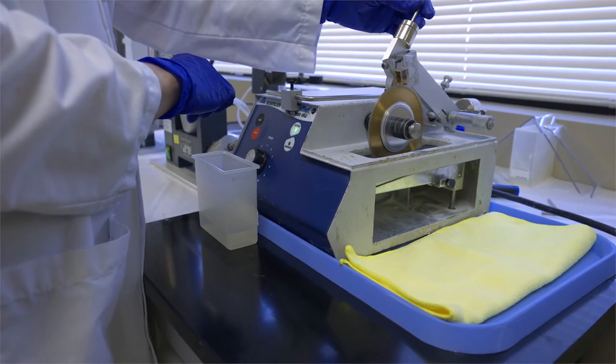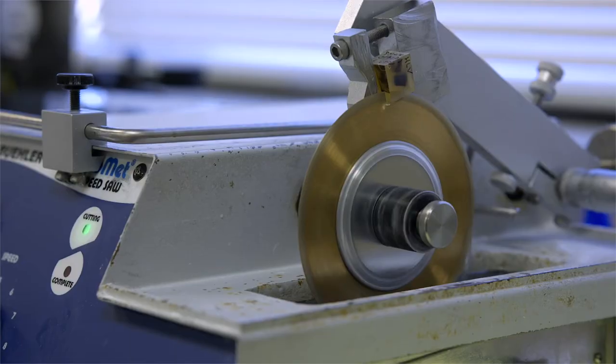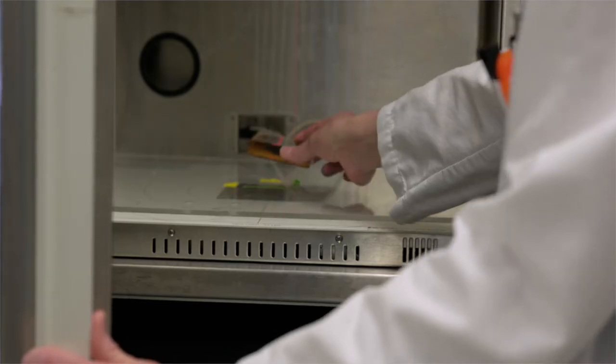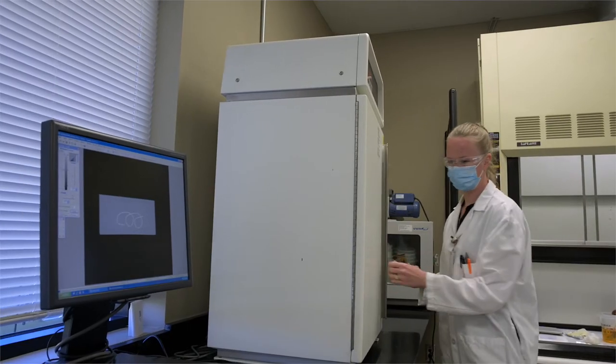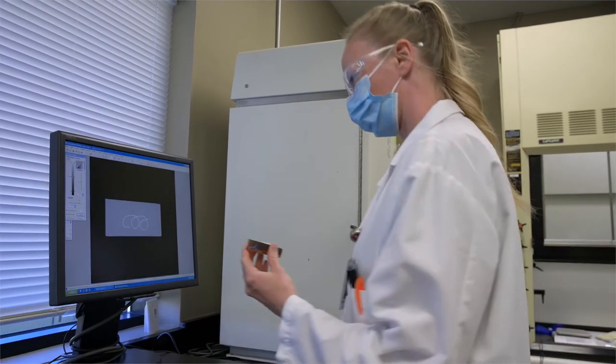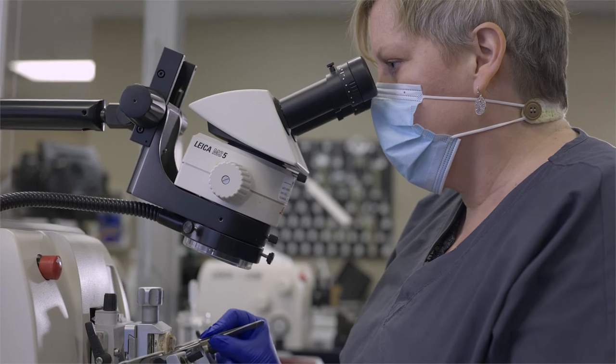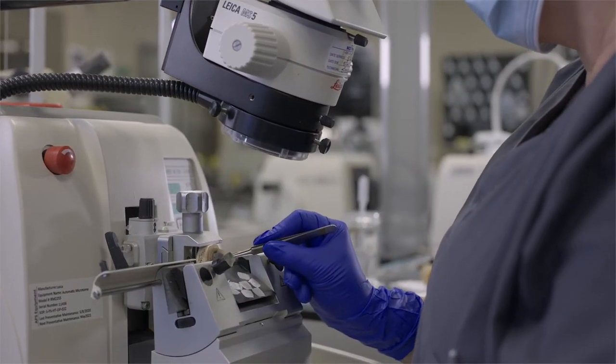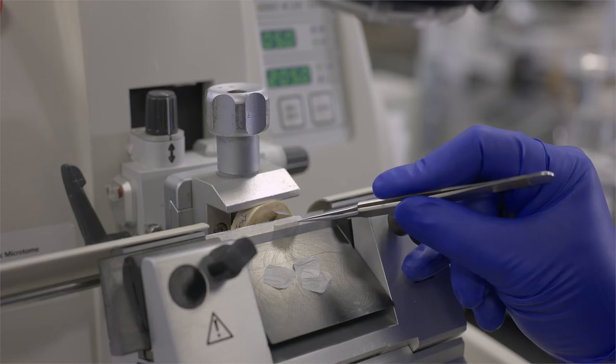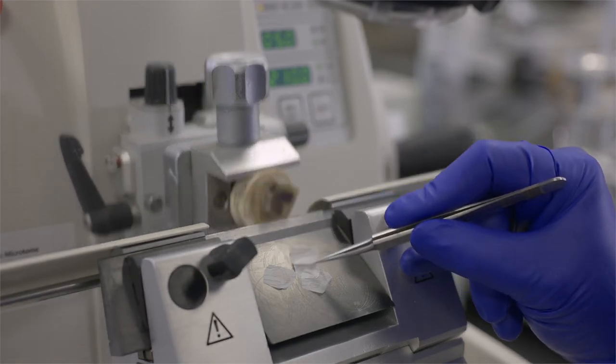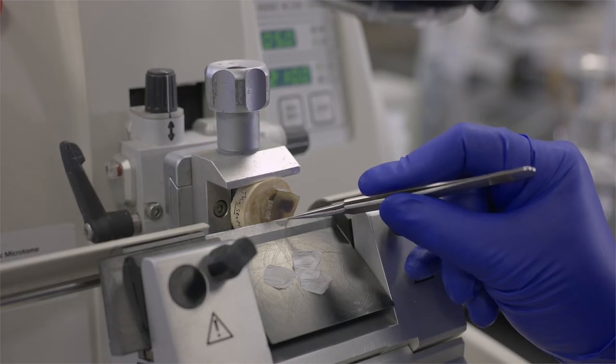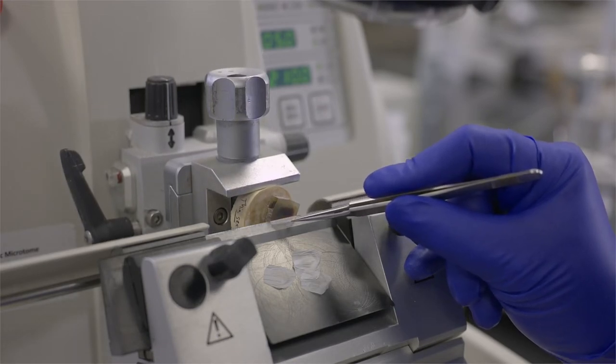Small embedded samples are now made into blocks using an isomet low speed saw with a diamond blade. An x-ray cabinet can be used to assist with determining cut lines. The blocks are either cut on a microtome, these are called thin section plastics and are cut at 5 microns, or they are ground on an exact grinder system to a thickness of 40 to 70 microns. We will go more in depth with the exact samples later.